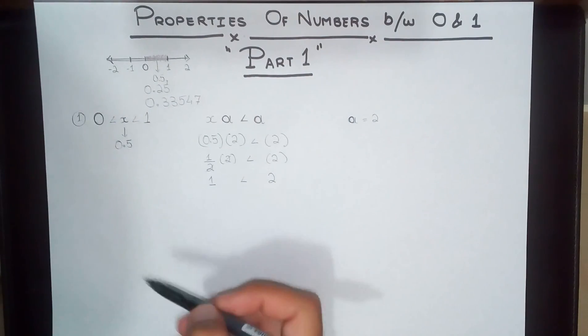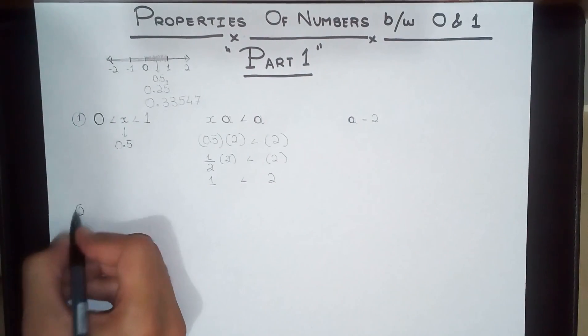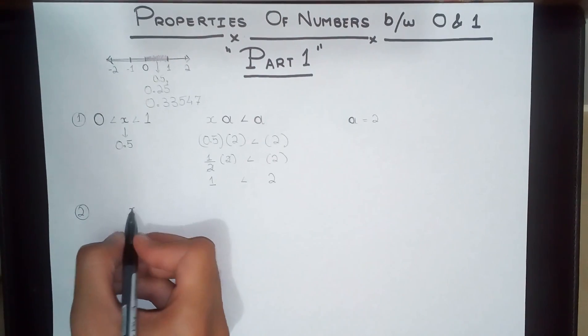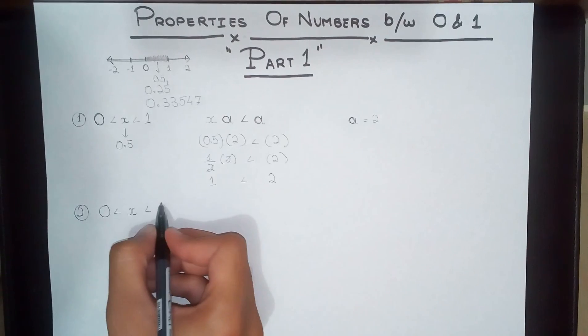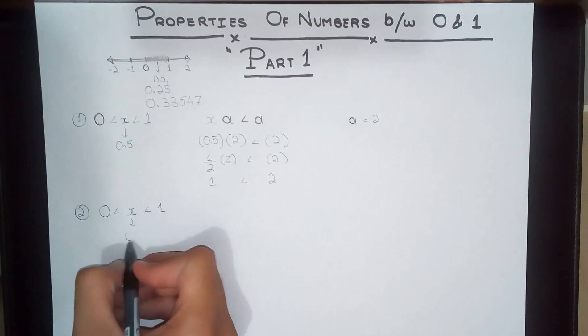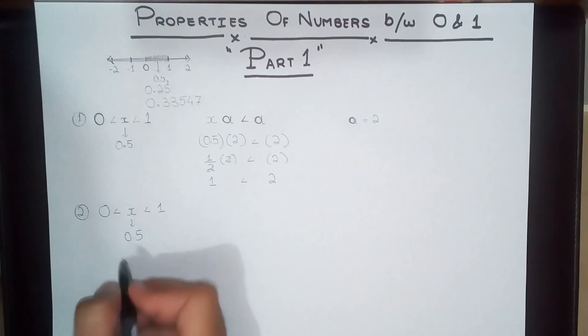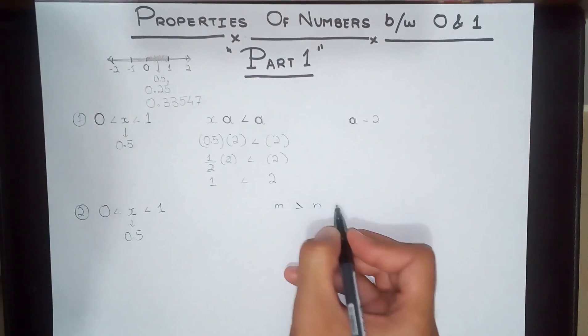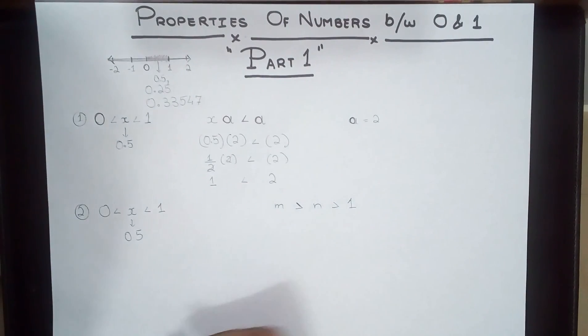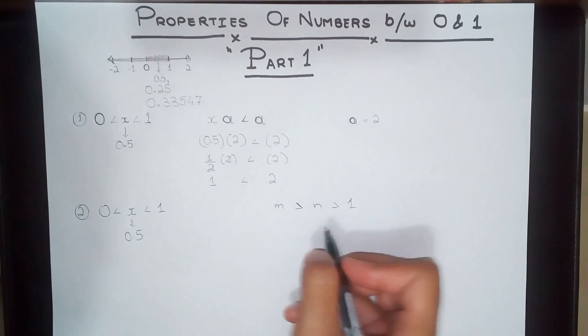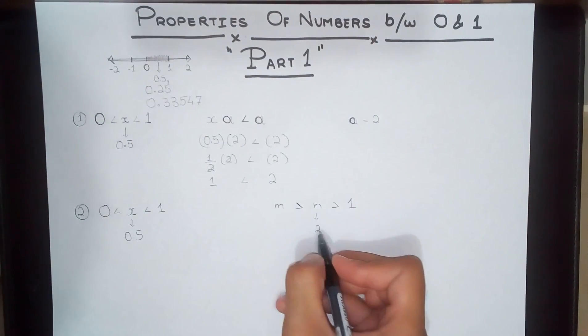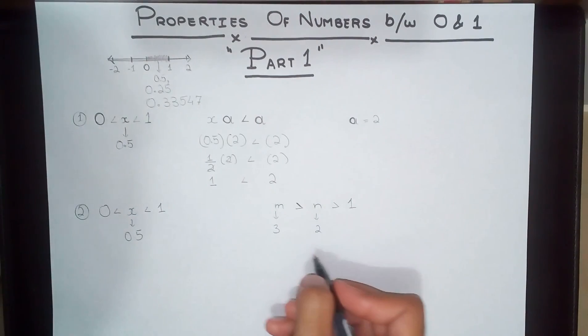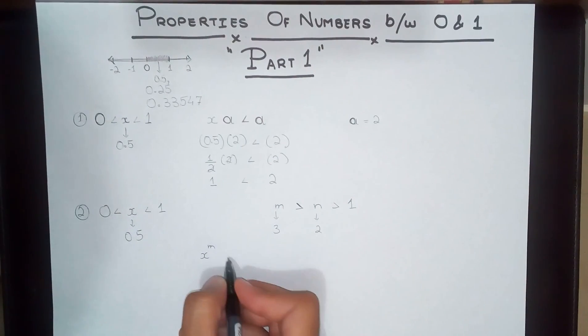Over to the next property we are going to be discussing. This is the last property. The same thing, the number we are going to be using is exactly 0.5 for the more specific terms. So m is greater than n and n is greater than 1. Specifically, we are going to be using these terms: n is 2 and m is 3. So what is the property?